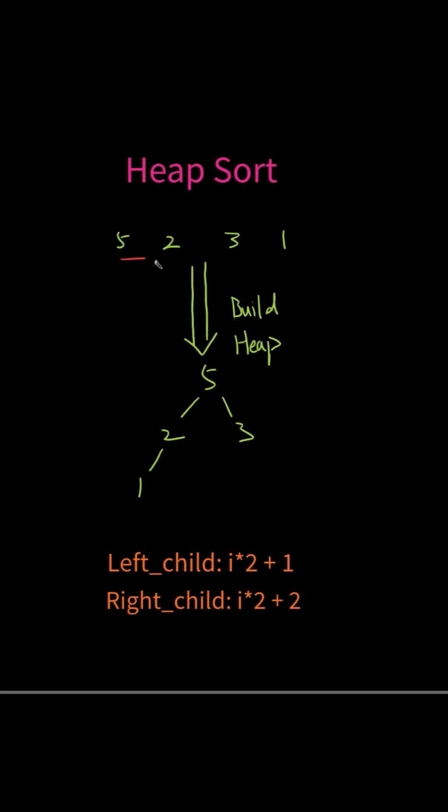Let's talk about heap sort. Let's say we are given an array like this. First we are going to build the heap, so we insert 5 as the root and we are building the tree from left to right.